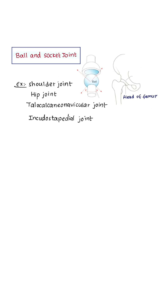Ball and socket joints: the rounded convex surface of one bone fits into a cup-shaped socket of another bone. Examples include the shoulder joint, hip joint, and talocalcaneonavicular joint.